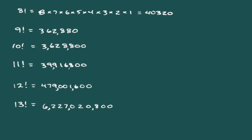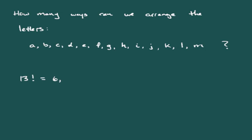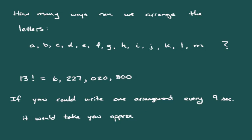To put that in perspective: how many ways can we arrange the first 13 letters of the alphabet, A through M? That's 13 factorial, or 6,227,020,800. Writing one arrangement takes about nine seconds. At that rate, it would take us 21.9 years to write out all possible arrangements.